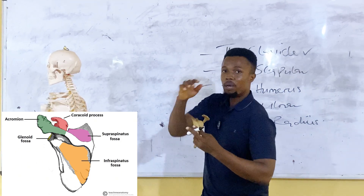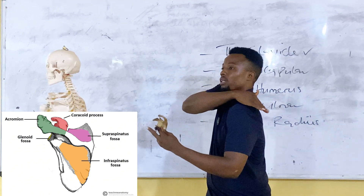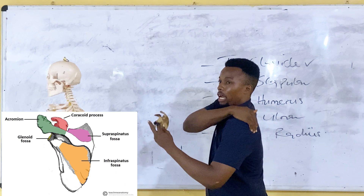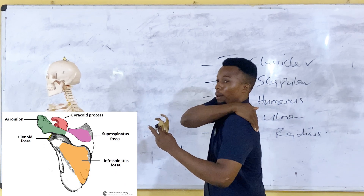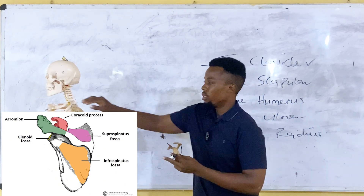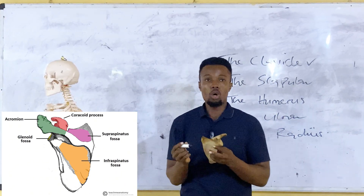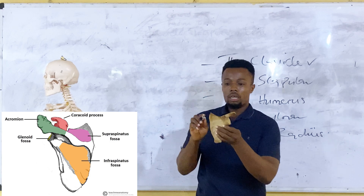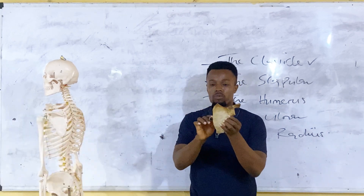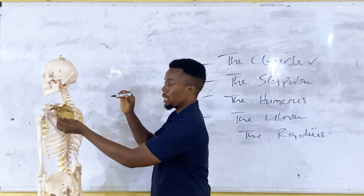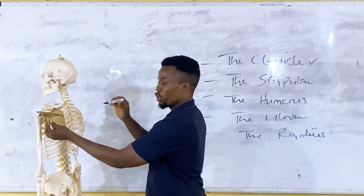You can place your hand at your back here and you feel the scapular bone. This is it. So this part of the scapular bone — you can see how the scapular bone is positioned.